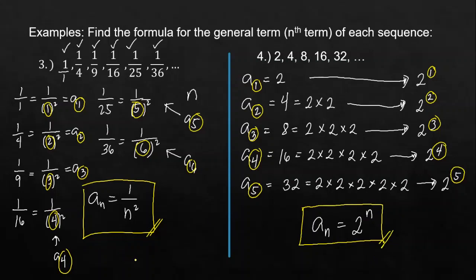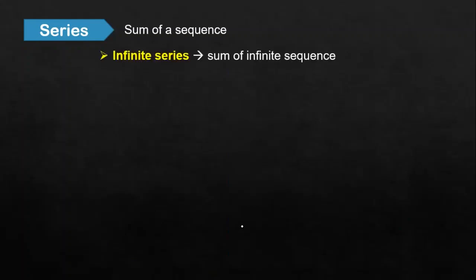Again, we have another video about this. But we're not only talking about sequence — we will also be defining series. When we talk about series, it involves the sum of a sequence. In other words, we are adding the members of the sequence. It can be an infinite series, meaning we add all the members of an infinite sequence. But because it's infinite, we can't easily determine its exact sum. The form looks like: a_sub_1 plus a_sub_2 plus a_sub_3, continuing until a_sub_n, with an ellipsis.